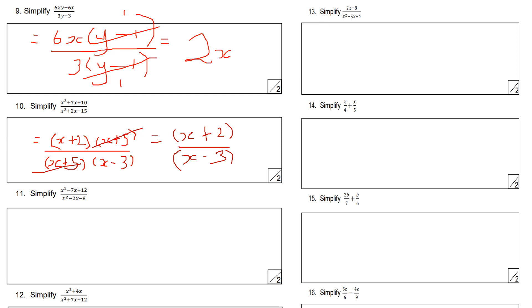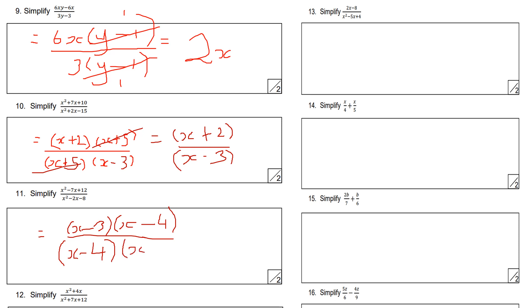This next one is a similar idea. Factorise numerator x² minus 7x plus 12 to get (x minus 3)(x minus 4). Factorise denominator x² minus 2x minus 8 to get (x minus 4)(x plus 2). Dividing top and bottom by (x minus 4) gives (x minus 3) over (x plus 2) as the final answer.